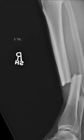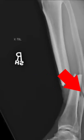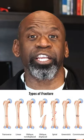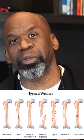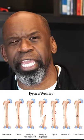The lateral film shows us a transverse fracture of the tibia and the associated fibular fracture. This is a transverse fracture, which is what we would associate with a direct blow to the tibia.